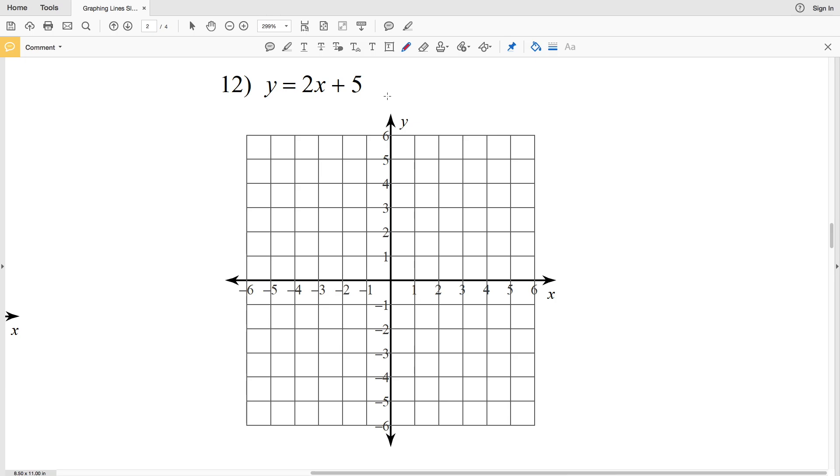And lastly number 12, y equals 2x plus 5. So our slope m is a positive 2 which we can write as 2 over 1, and our b or y-intercept is a positive 5. So when x is 0, y is a positive 5. And then going up 2 and over 1 will put us off the graph so we'll just rewrite this 2 over 1 as negative 2 over negative 1. So we're going to go down 2 and over 1 to the left to get us to (negative 1, 3).